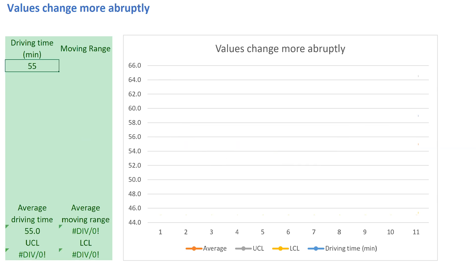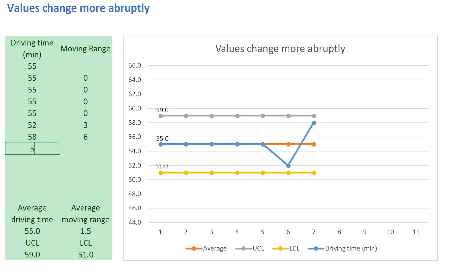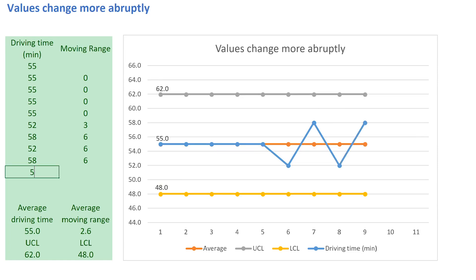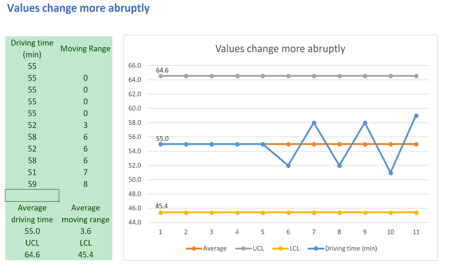In the third and last example, we plot values that become increasingly farther from one another. As we enter the values, the moving range shows larger and larger jumps from one value to the next. This results in the widest control limits. Now, the average moving range has increased from 2.8 to 3.6, giving us control limits at 64.6 and 45.4.